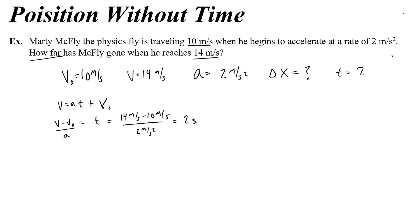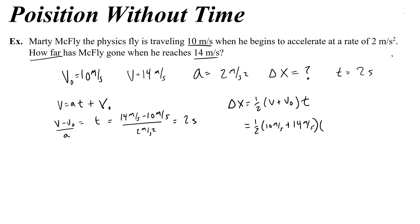Now I can use any of my position equations to figure out how far forward McFly has gone. I'd use the equation with average velocity: delta x equals half of v plus v-naught times time. That's half of 10 plus 14, times 2 seconds — half of 24 is 12, times 2 is 24. So 24 meters — that's how far McFly goes.